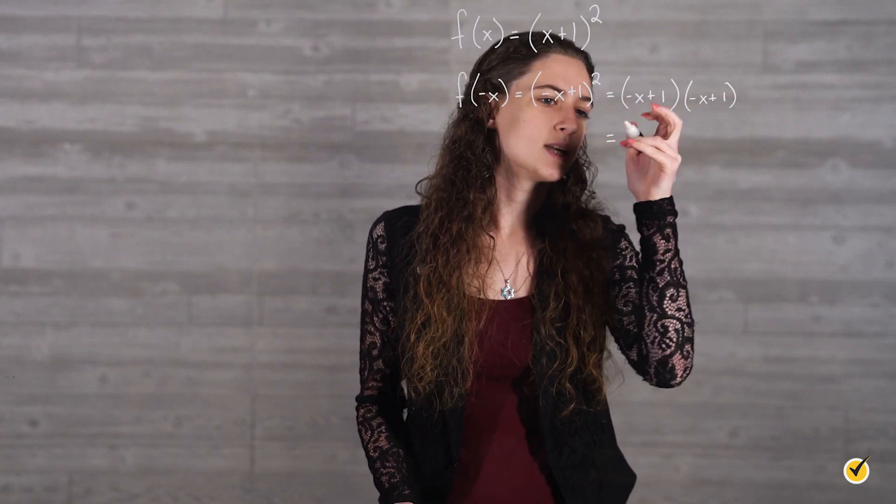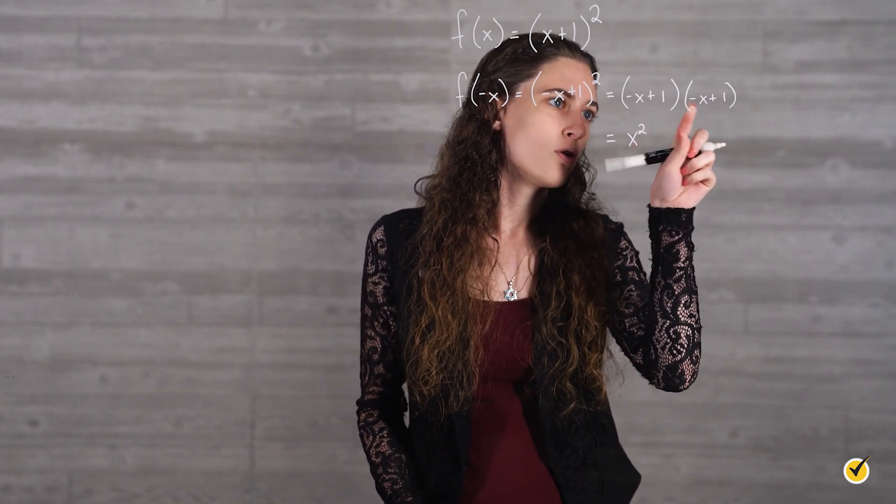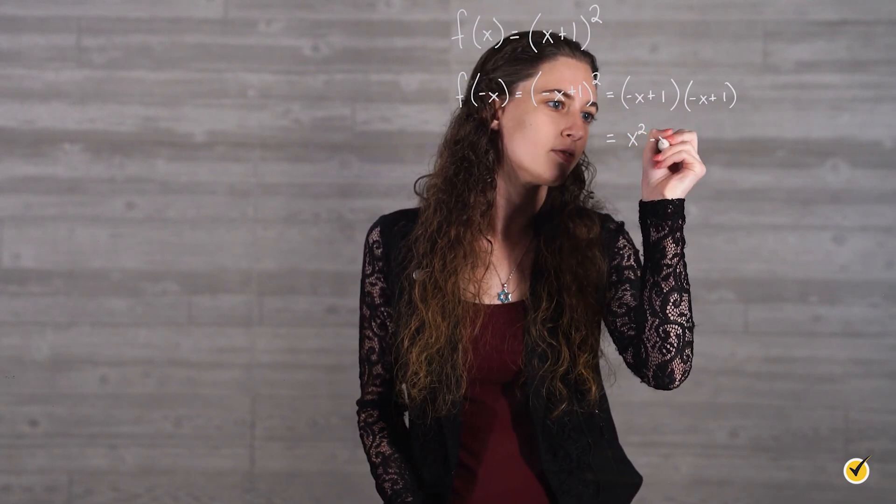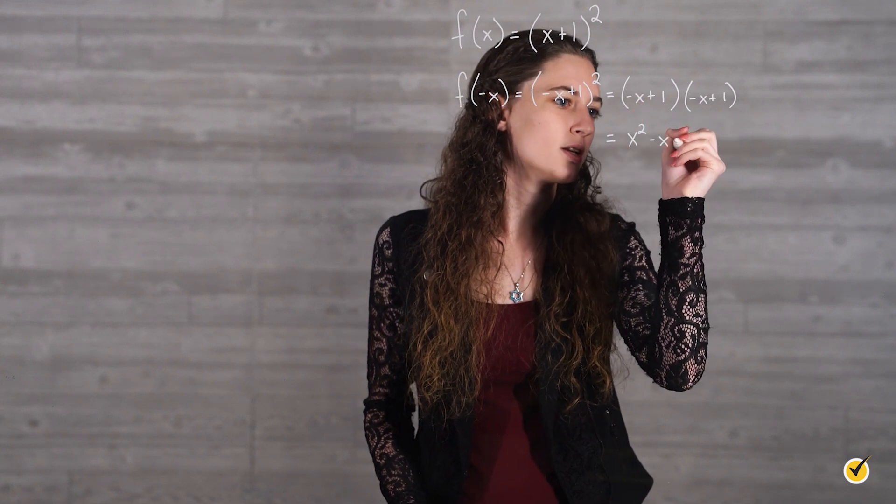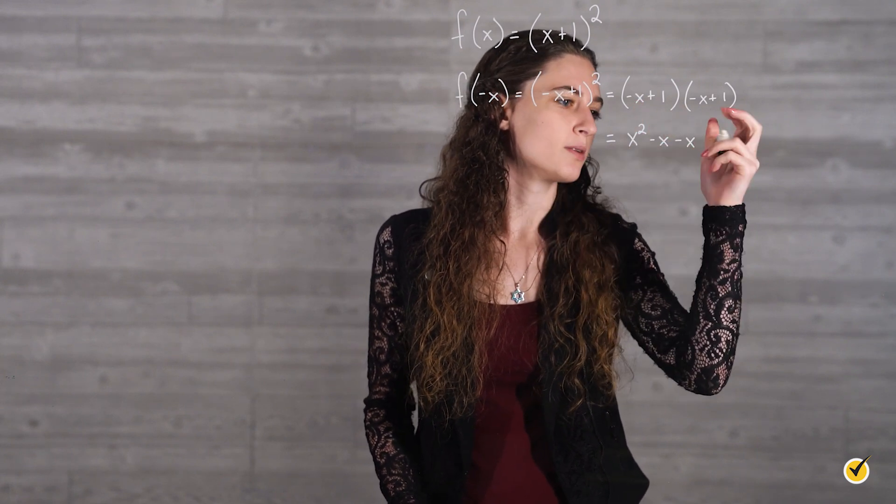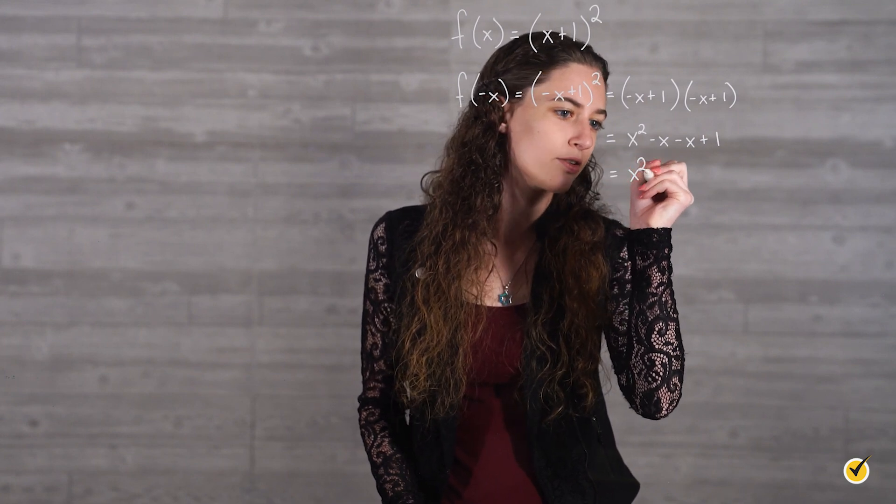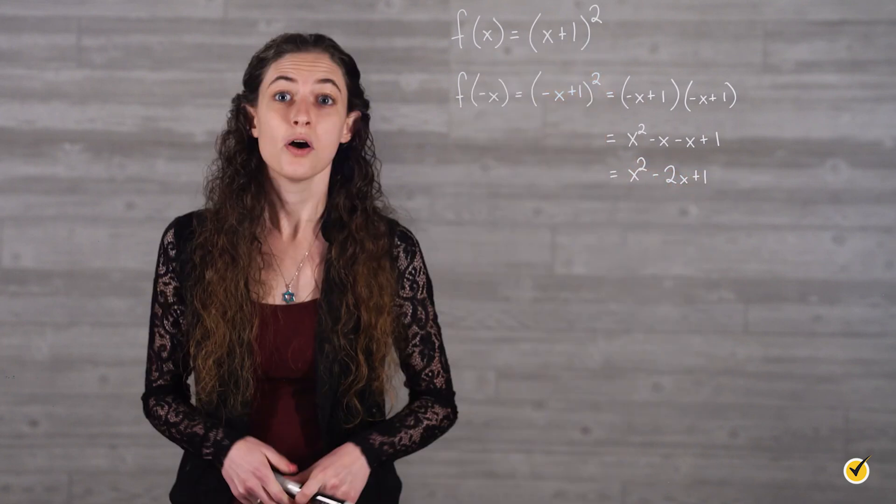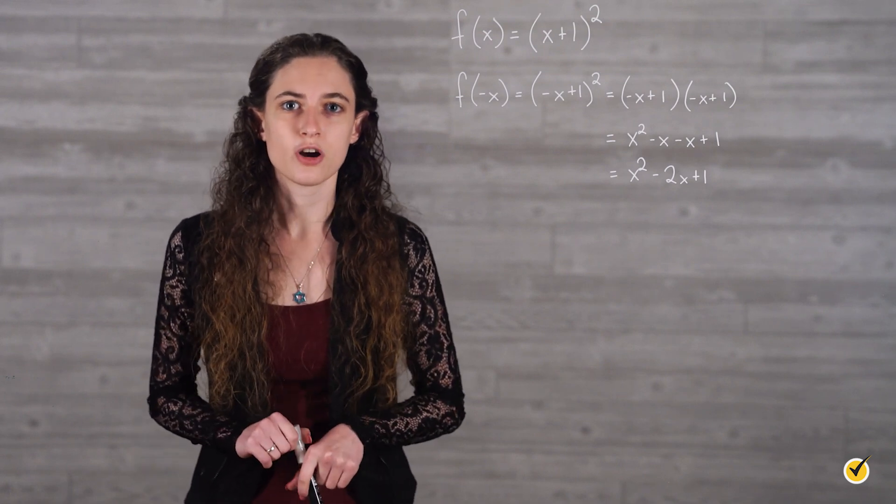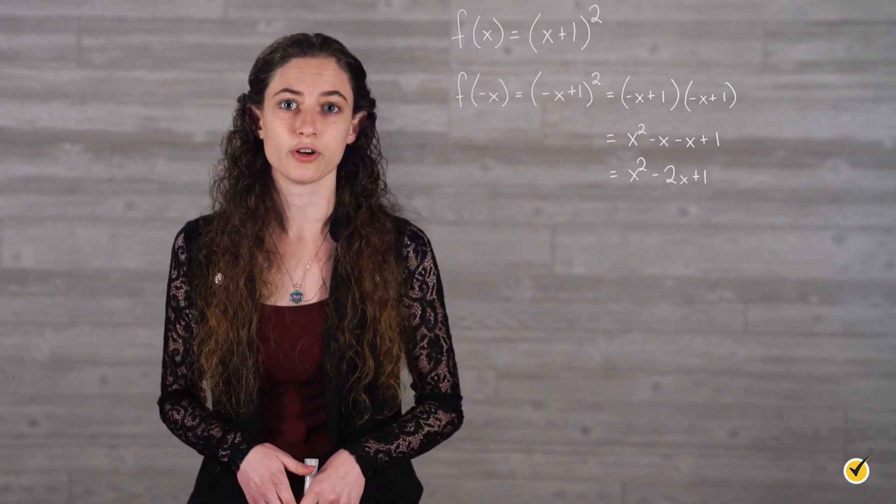So negative x times negative x is x squared, 1 times negative x is negative x, negative x times 1 is negative x, and 1 times 1 is 1. So we have x squared minus 2x plus 1. But remember, to determine even or odd, we have to compare this to our original function. So let's expand that.